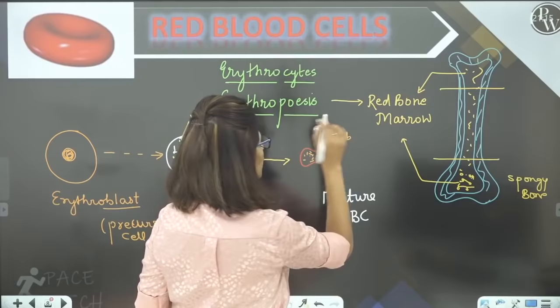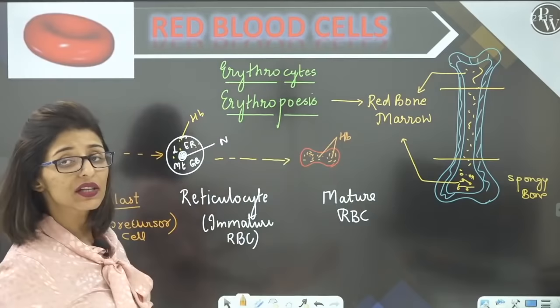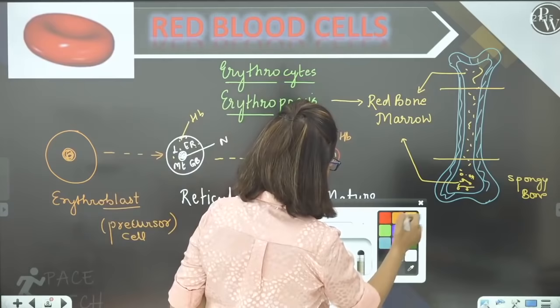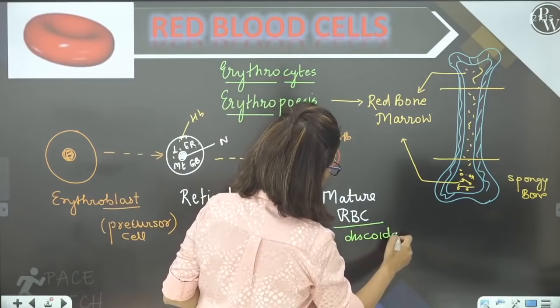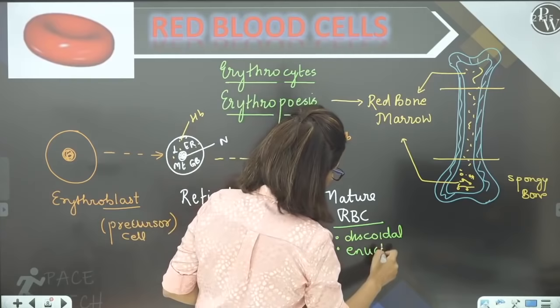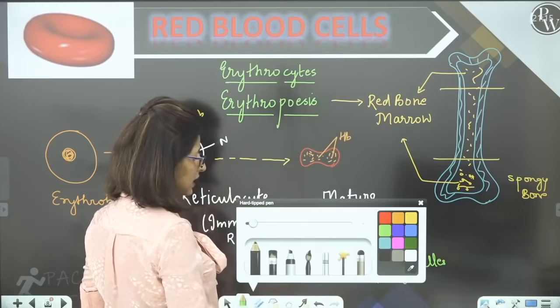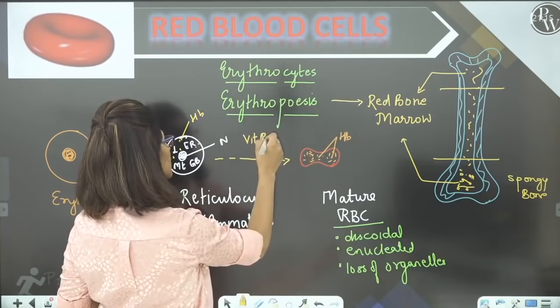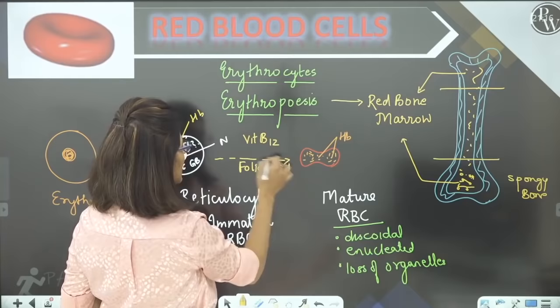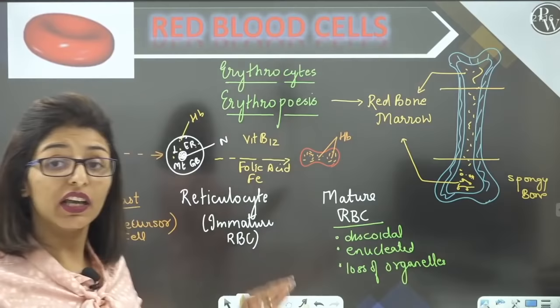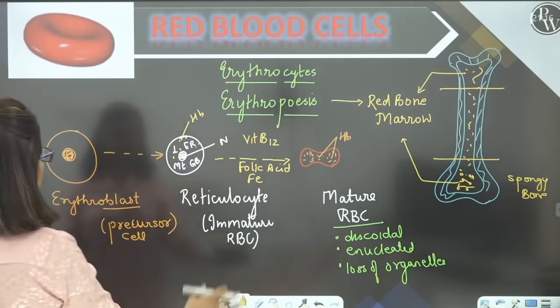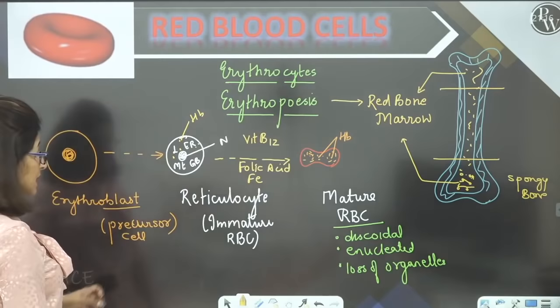Mature RBC ke features: shape discoidal, enucleated, organelles ka loss. Yeh sab karwane ke liye hume khane padenge Vitamin B12, folic acid, aur iron — teen cheezein bahut important hain for maturation of RBC. RBCs red bone marrow mein ban rahe hain. Banane ke baad life span hoti hai 120 days.